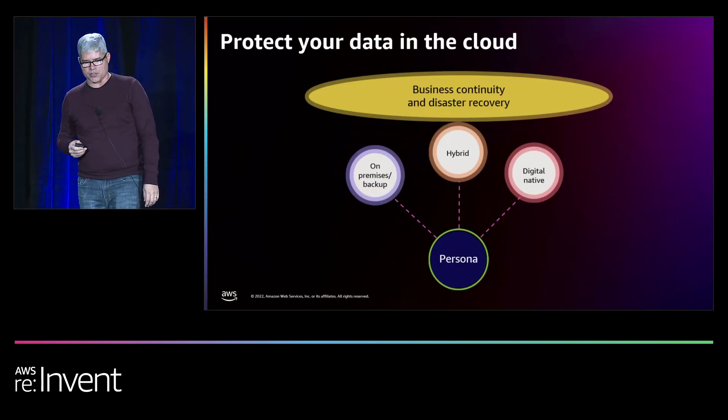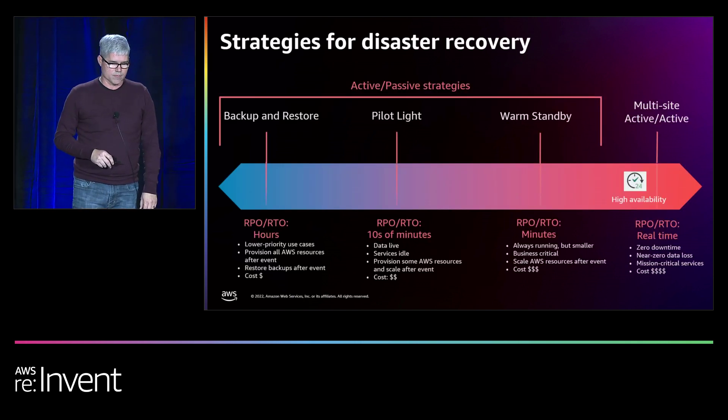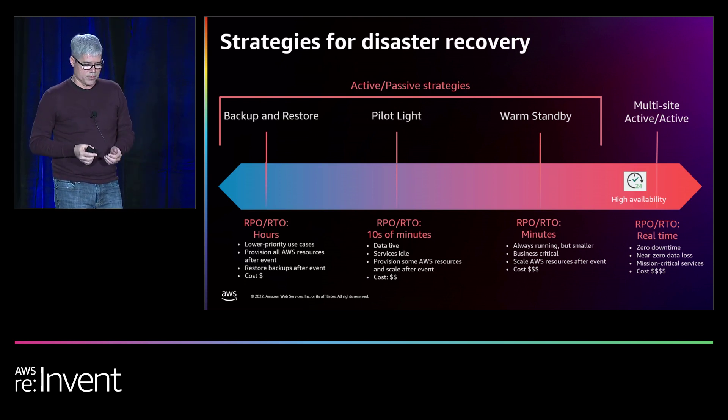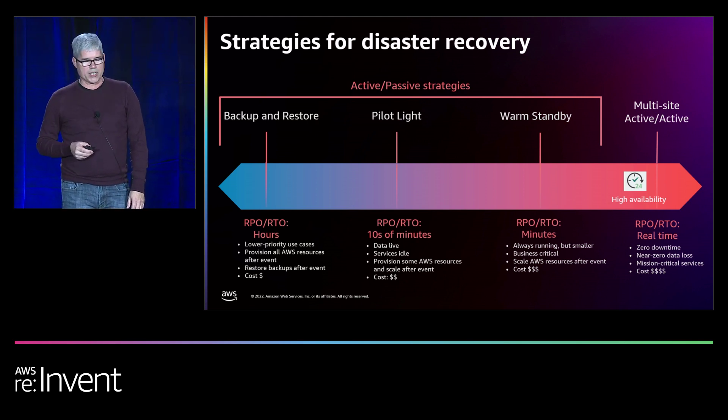I'm now going to hand it over to Jay to talk about business continuity and disaster recovery design patterns, which is top of mind for all three customer personas we discussed. Disaster recovery strategies can generally be classified in four different approaches with AWS, each with a different balance between cost, implementation and operational complexity, protection, and recovery time.